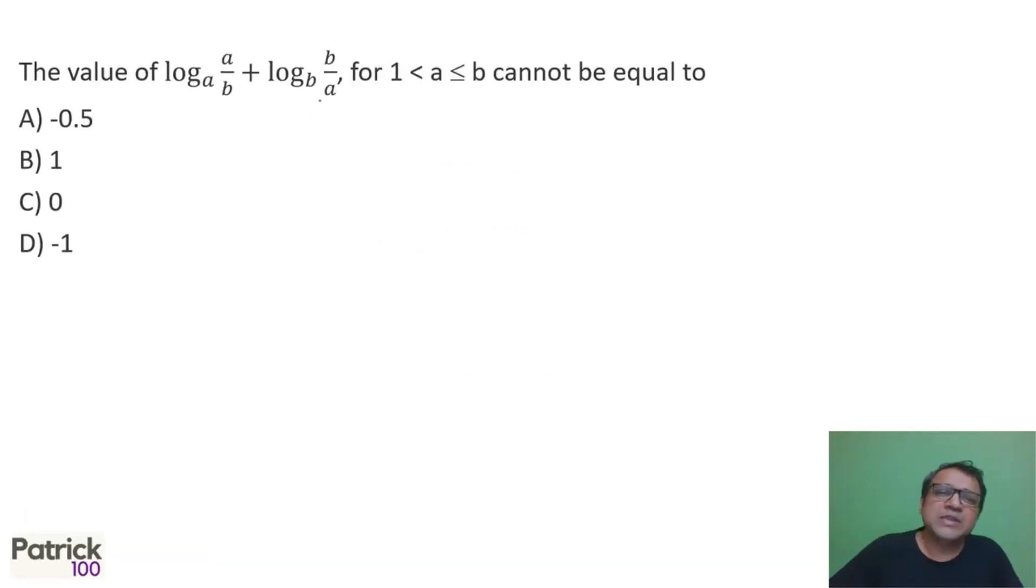So whenever you have variables, one way to substitute is substitute values. And since here we are finding a range of values, substitute extreme cases. Now one normal extreme case is when they are equal. So if I say A equal to B, that's one extreme case. So in which case if I put A equal to B, you will realize it becomes log one plus log one, which becomes zero zero. So answer will be zero.